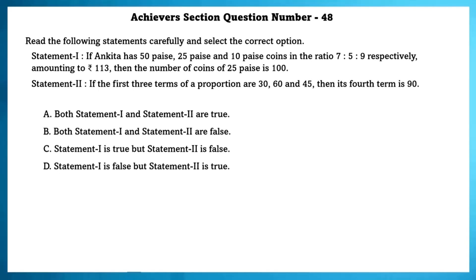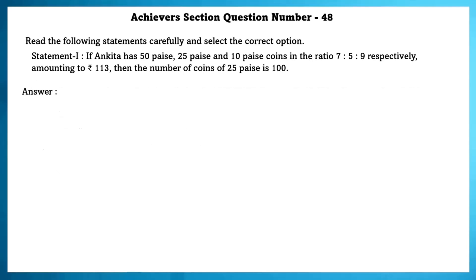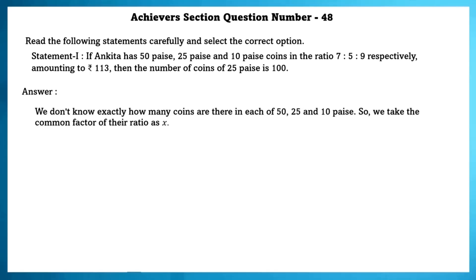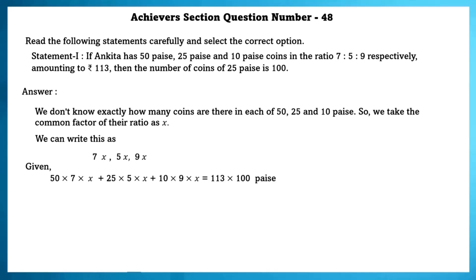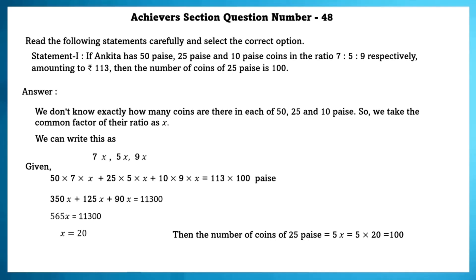Achieve section question number 48. Statement 1: Ankita has 50 paise, 25 paise and 10 paise coins in the ratio 7 is to 5 is to 9, amounting to 113 rupees. Then the number of 25 paise coins is 100. Taking common factor x, we write 7x, 5x, 9x. Then 50 into 7x plus 25 into 5x plus 10 into 9x equals 11,300. Solving gives x equals 20, and the number of 25 paise coins is 5 into 20 equals 100. Statement 1 is true.